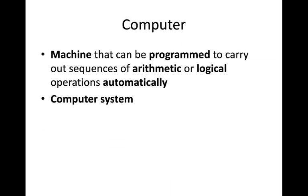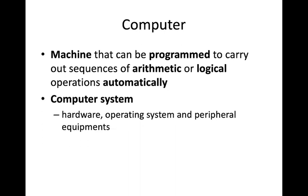A computer system consists of the hardware, operating system, and peripheral equipment together. It includes all the software also. So hardware, operating system, plus the peripheral equipment — we call it a computer system.